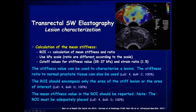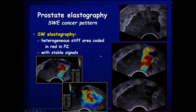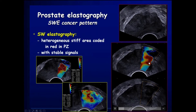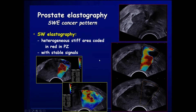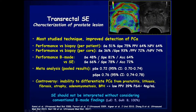Stiffness values can be used to characterize a lesion, and the stiffness ratio to normal prostate tissue can be combined to improve lesion characterization. The mean stiffness value of the region of interest should be reported, with both measurement areas placed adequately. This is a dynamic technique, and you can see the detection of an abnormal prostate cancer in the anterior peripheral zone at the base.